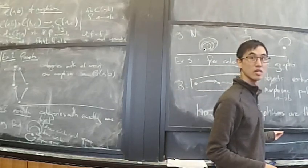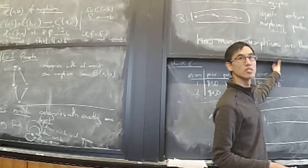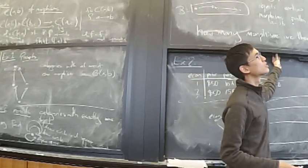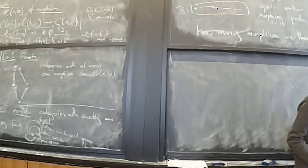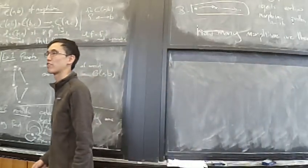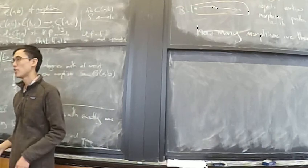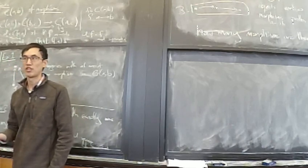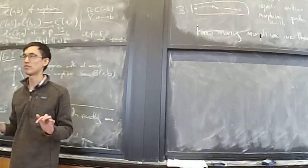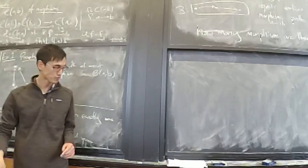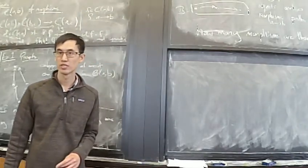Does anyone have any questions at this point? Can I clarify — is there some notion of inverse morphism? No — it's certainly true that if there is a notion of inverse morphism then we start having equations like f composed with f-inverse equals the identity, and that means it's not free. But in general there are categories that don't have inverses that are still not free.